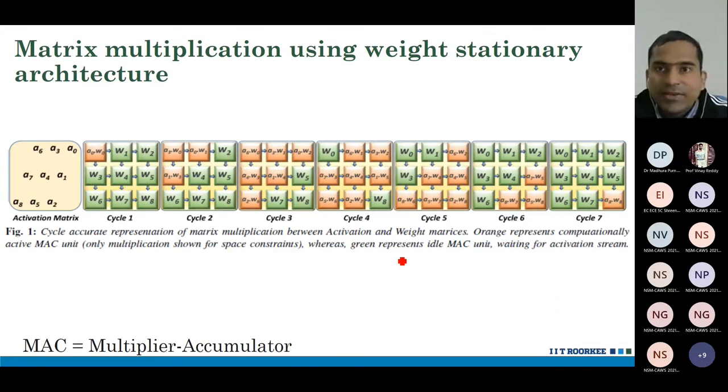Here, it is weight stationary. Weights are already stored. And output will keep on moving. Here, input is here. Weight is already stationary. As the output gets computed, it will keep on moving outside. It will keep on moving outside the systolic array. Here, we have A0, W0.